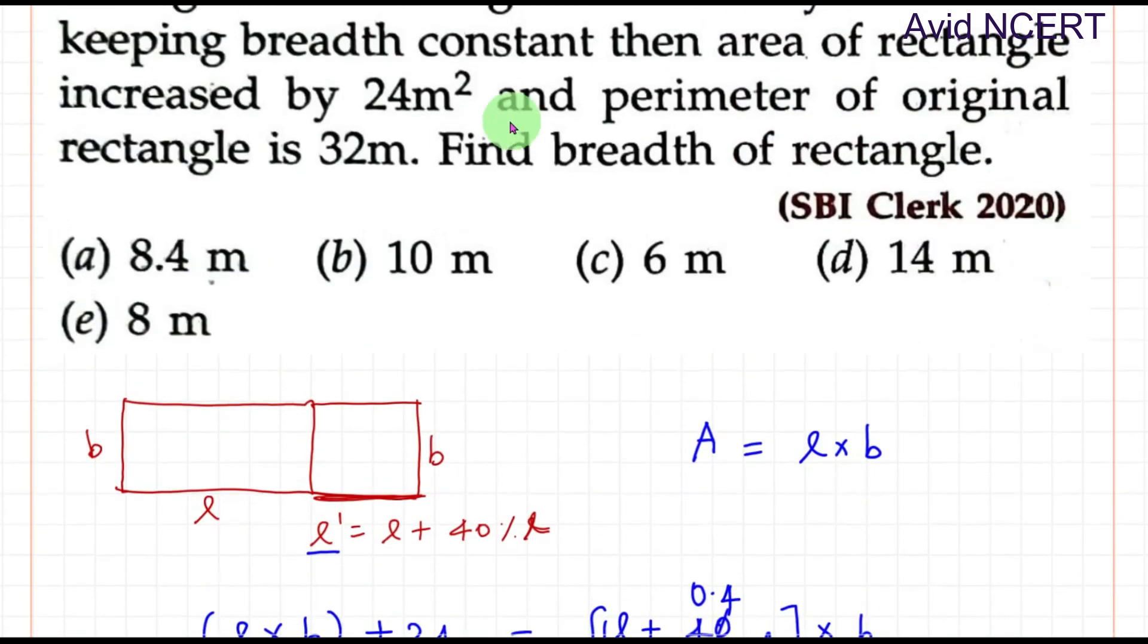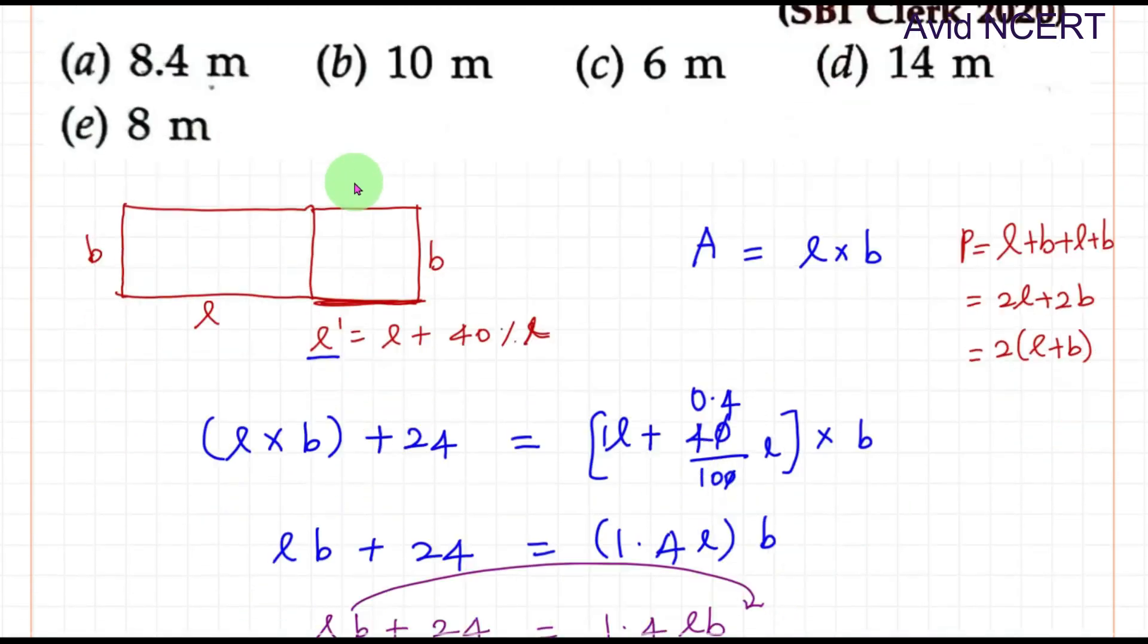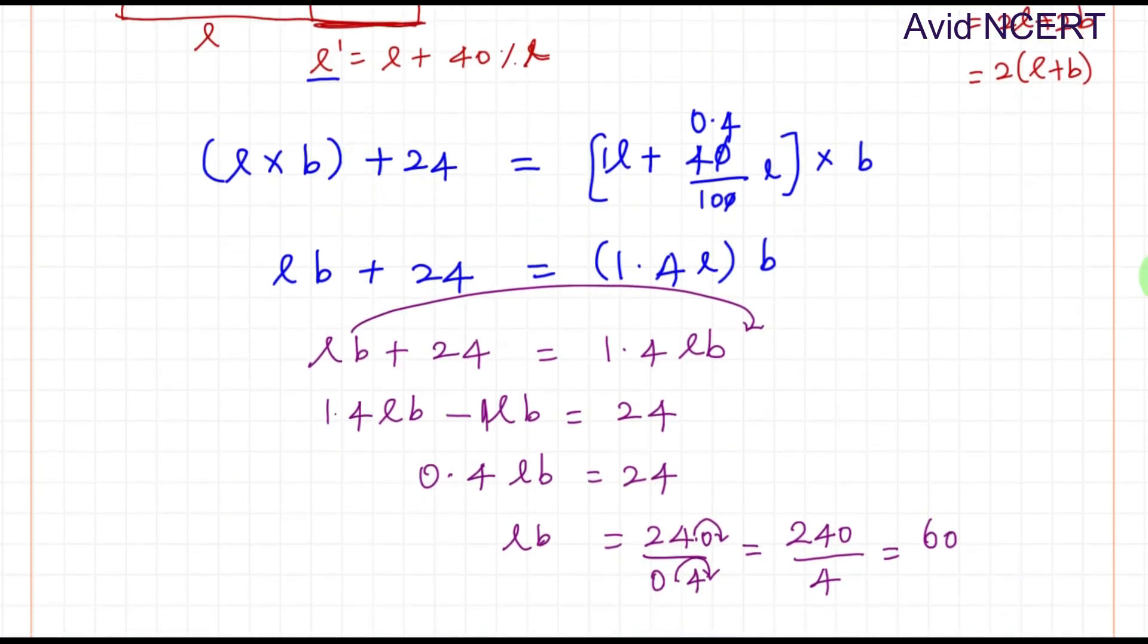Now from the next sentence, the perimeter of the original rectangle is 32 meters. The perimeter can be found by adding all the sides: L plus B plus L plus B, which equals 2L plus 2B, or 2 times (L plus B). So 2 times (L plus B) equals 32 meters. Therefore, L plus B equals 16.